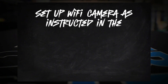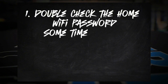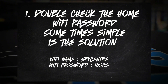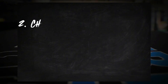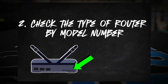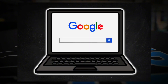Step one: go through the setup exactly like you normally would and see if there's an issue. If the camera won't connect, the first troubleshooting step is to make sure you are selecting the correct Wi-Fi and entering the correct password. If that wasn't the problem and the camera still won't connect, it's time to identify what type of Wi-Fi router you have. Find the model name of your router and do a quick Google search with the words 'dual band' — it's an easy way to identify what type of router you have.